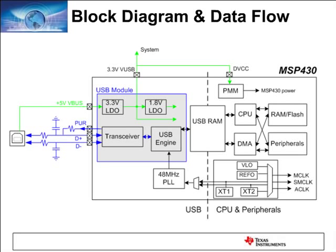The 1.8-volt LDO is part of every 5xx family, supplying the digital core. The architecture also contains the integrated USB transceiver and what is called the USB engine, which manages USB protocol requirements for data packets being received and transmitted. It serves as an interface between the USB RAM — where data is stored or read out — and the transceiver, which is the physical layer. On the right-hand side you can see the rest of the MSP430 architecture: CPU, DMA, peripherals, RAM, and the clocking system.